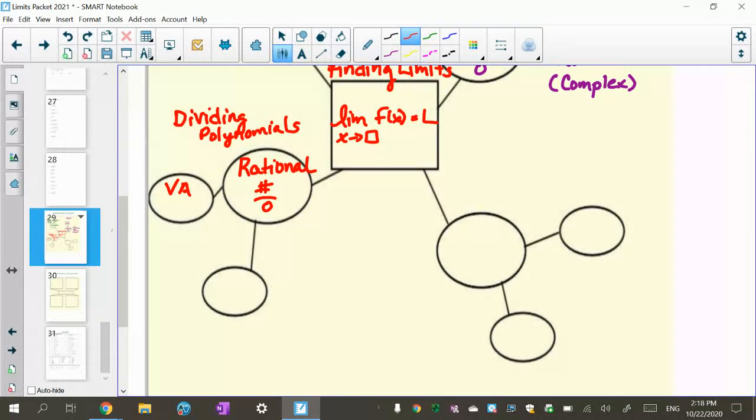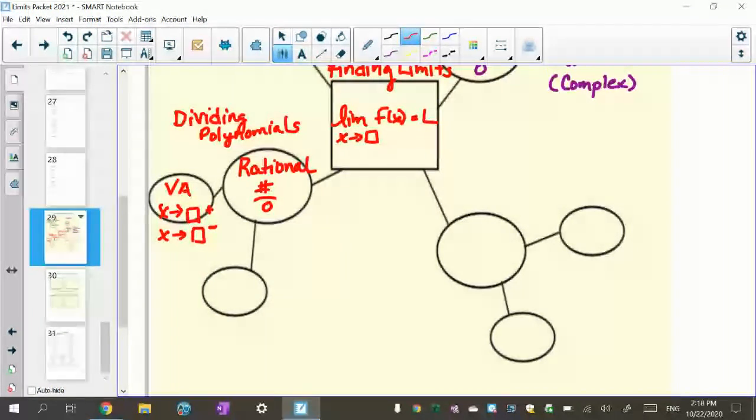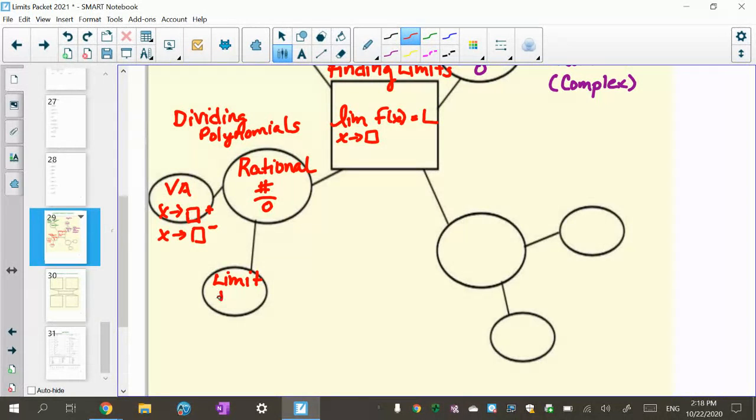And lots of times you'll see x approaching a number from the right, x approaching a number from the left. So you see that a lot, and that's your vertical asymptote. And your limit is usually, it's always going to be plus or minus infinity. So your limit is infinity. So it's going to go up or down. That's the one thing on that one.